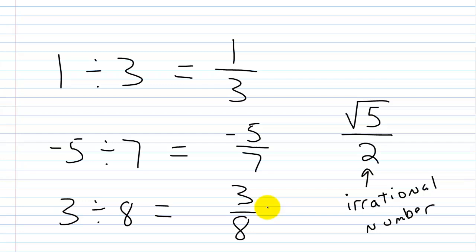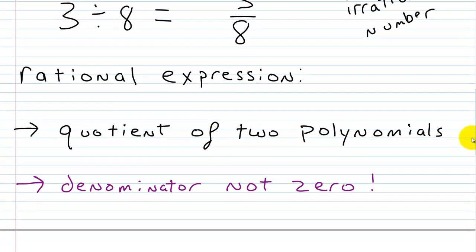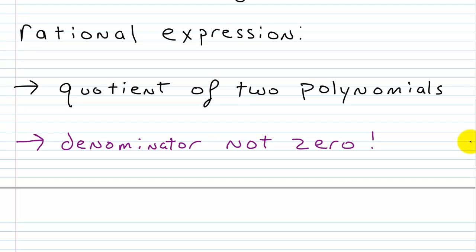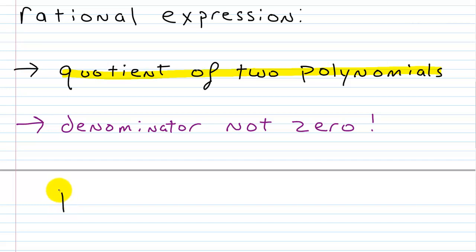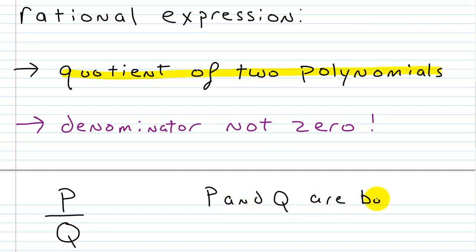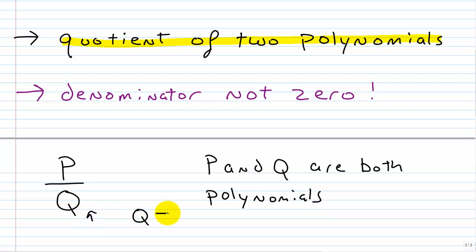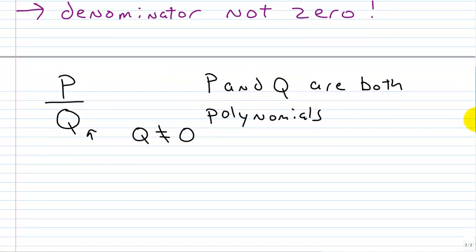So when we talk about something called a rational expression, it's a very similar concept. The only difference is that now we're talking about the quotient of two polynomials. And again, the denominator cannot be zero because we can never divide by zero. Your textbook will show it as P over Q, where P and Q are polynomials, and Q cannot equal zero. Let's look at a couple of examples of a rational expression.